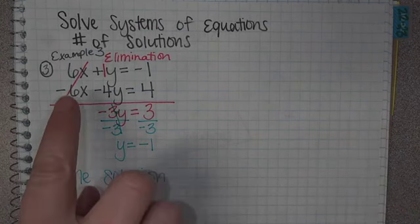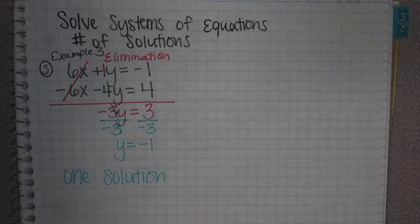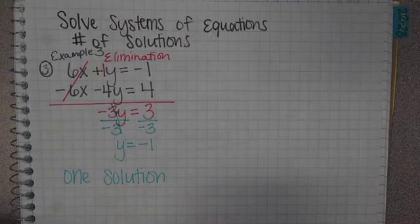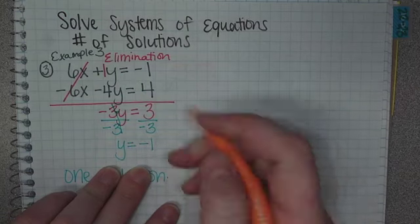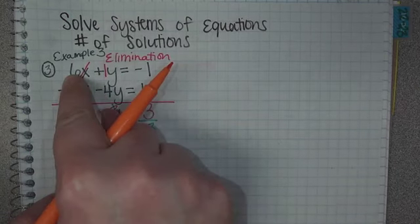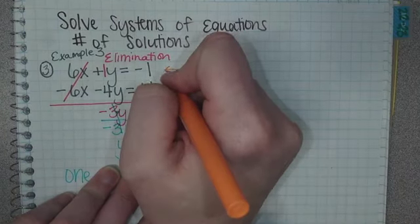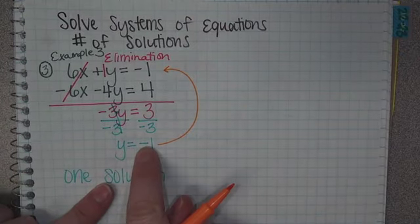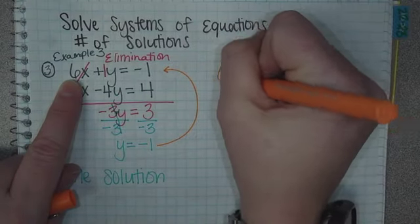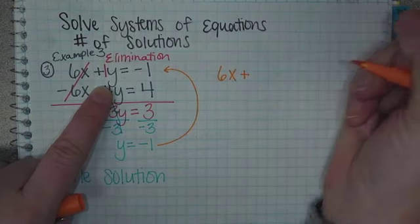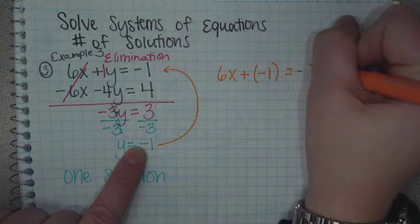This is going to be one solution because the variables didn't cancel. We're going to actually find our solution. Remember, you know the y. Now we need to find the x. Now we know our y value. You're going to plug it into one of them. It doesn't matter which one. I'm going to personally do the top because it's not negative, negative, and all of that.